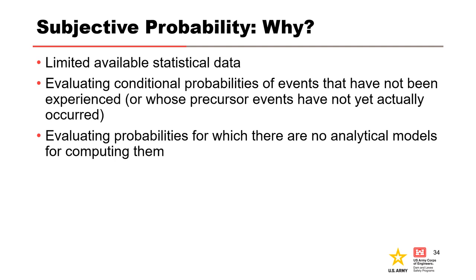A subjective probability estimate is the numerical value or range of values judged to be believable based upon the available evidence. Subjective probability estimates are typically made to represent the likelihood of each event for a potential failure mode decomposed for event tree analysis. For many dam and levee safety applications, there is limited statistical data to work with — we are evaluating conditional probabilities of events that have not been experienced and for which there are no well-defined analytical models. Chapter A6 of the Best Practices Manual covers subjective probability and elicitation procedures.